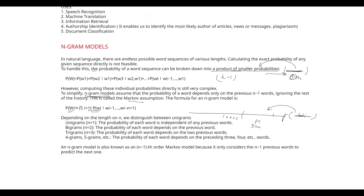Depending on the length of n, we distinguish between types. When n equals 1, it is called a unigram — there is only a single word and the probability of each word is independent of any previous words. When n equals 2, it is called a bigram, meaning the probability of the second word depends on only one previous word.